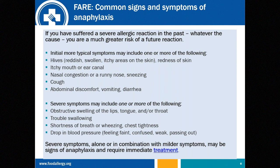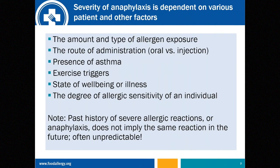The severity of anaphylaxis is often dependent on various patient factors as well as environmental factors, including the amount and type of allergen exposure, the route of administration — injection or oral — the presence of asthma, exercise as a trigger in some individuals, and whether the person is being treated for an infection. The degree of allergic sensitivity in that individual also matters. Past history of severe allergic reactions does not imply the same reaction in the future. As I tell my patients: anaphylaxis is like the letter U — unpredictable.